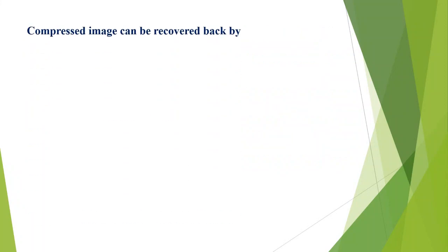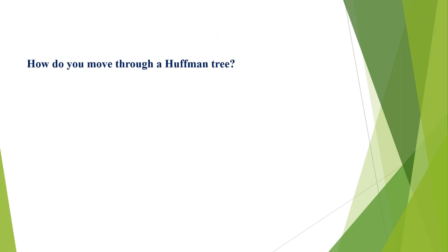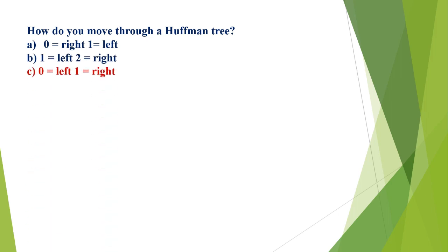A compressed image can be recovered back by: A) image enhancement, B) image decompression, C) image contrast, D) image equalization. The correct option is B, image decompression. How do you move through a Huffman tree? A) 0 = right, 1 = left; B) 1 = left, 2 = right; C) 0 = left, 1 = right; D) 0 = middle, 1 = back. The correct option is C, 0 = left and 1 = right.